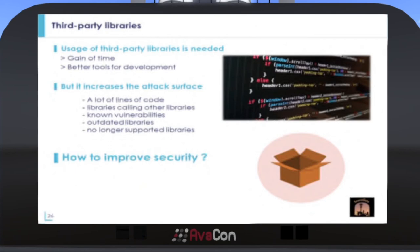The last issue is related to third-party libraries. Usage of libraries is needed for a gain of time during development, and it allows developers to have better tools and functionalities in the software. But they also increase the attack surface due to more lines of code. Also, some libraries call other libraries, which increases the attack surface further. Moreover, it happens that libraries have known vulnerabilities with exploits ready for any attacker to use. The number of known vulnerabilities rises when we use outdated or unsupported libraries.